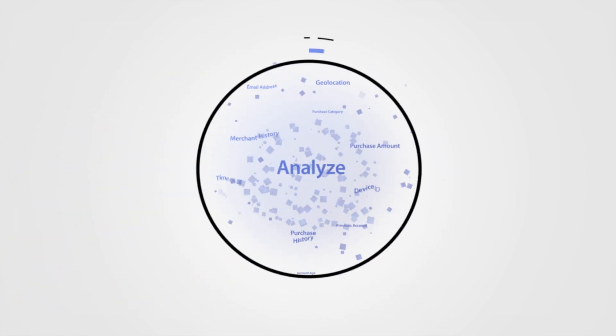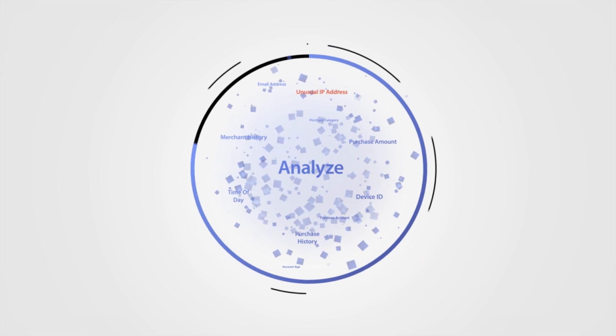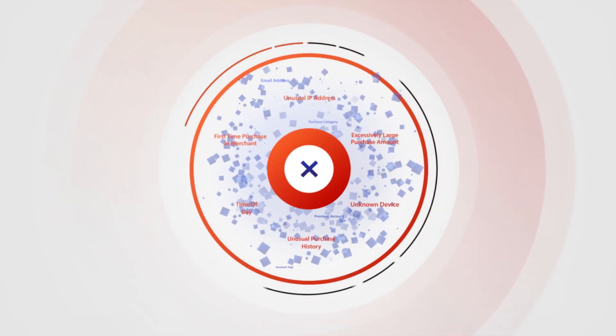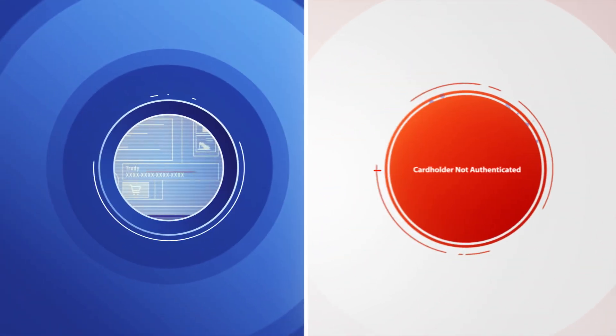Using 10 times more data, 3D Secure 2.0 delivers an additional layer of security and streamlines the checkout process by analyzing that data behind the scenes.